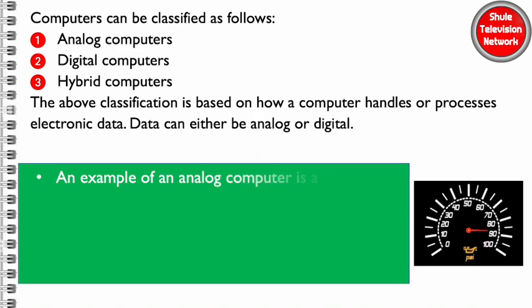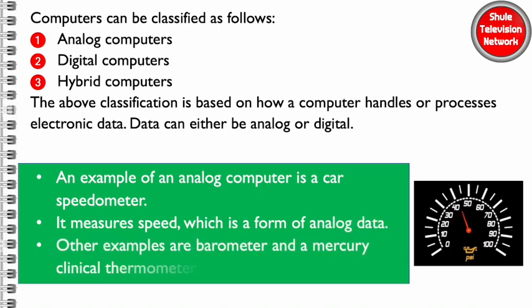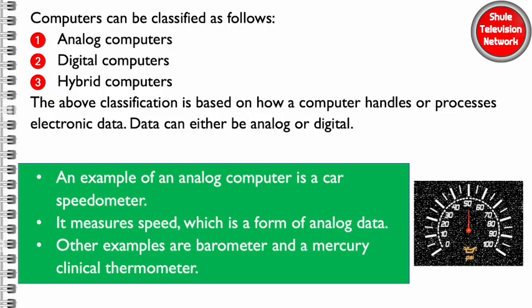An example of an analog computer is a car speedometer. It measures speed, which is a form of analog data. Other examples of analog devices are barometer and a mercury clinical thermometer.